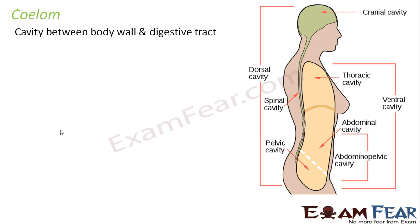If you look at a picture, it gives you an idea of what we mean by cavity. Inside the body, we divide the cavity into different types: the cranial cavity (space in the brain region), the thoracic cavity, and the spinal cavity. The coelom is a fluid-filled space in a multicellular organism, excluding the blood vessels and lymph vessels, which are also fluid-filled spaces.